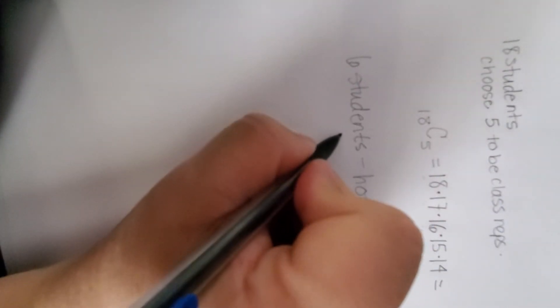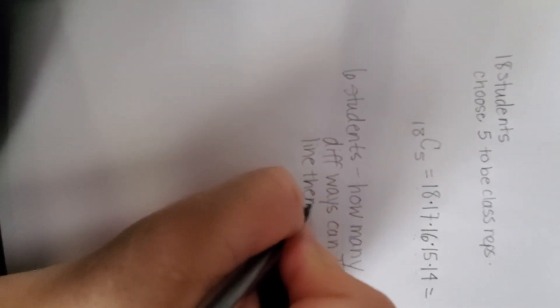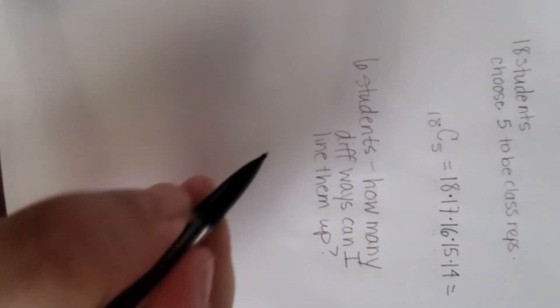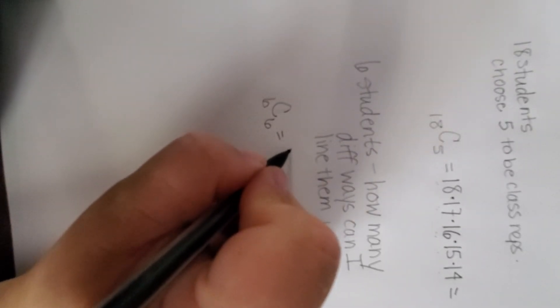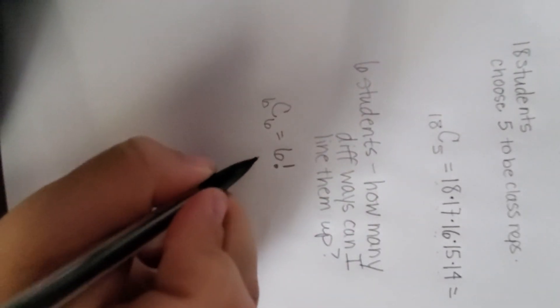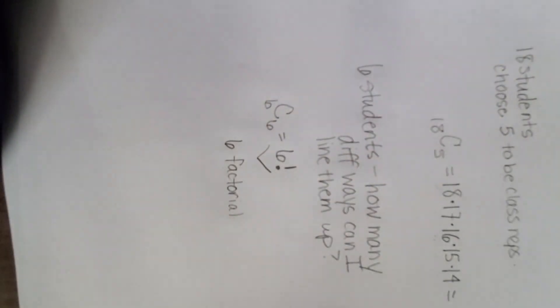But what if I said I have 6 students? One of the favorite questions they ask is, how many different ways can I line them up? Well, I have 6 students. I'm going to choose all 6 of them. When you're choosing an entire group, you can write 6 with an exclamation after it. This is called 6 factorial. When you see an exclamation point, it's called factorial.